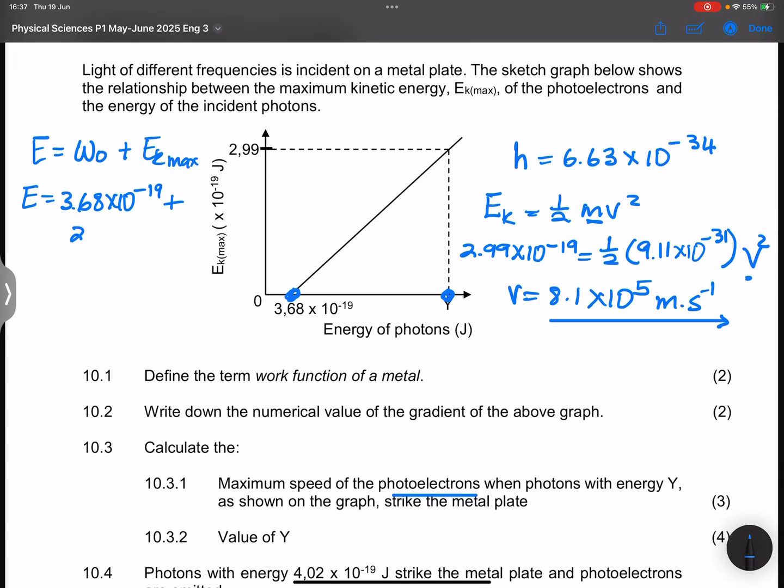As 2.99 times 10 to the power of minus 19 as well. So the value of Y, that's the energy of the photon in that case.